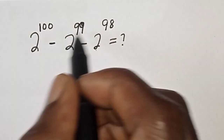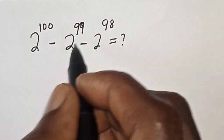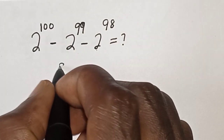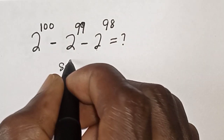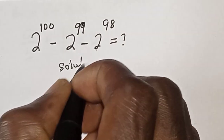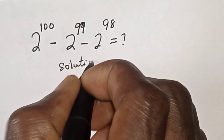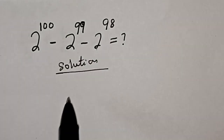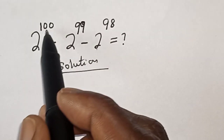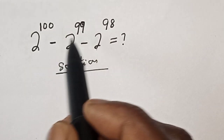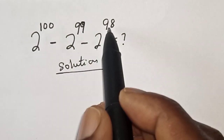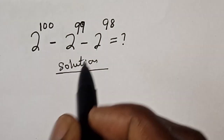Before we proceed, please don't forget to like, share, comment and subscribe. Solution: we have 2 raised to power 100 minus 2 raised to power 99 minus 2 raised to power 98.